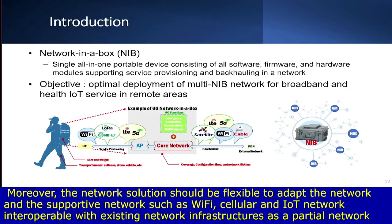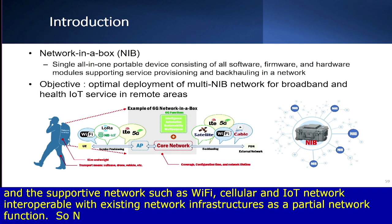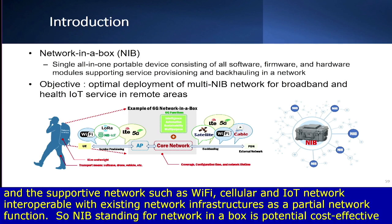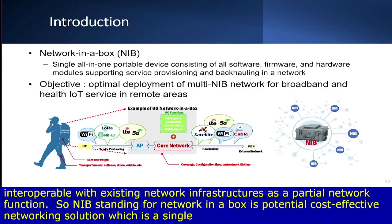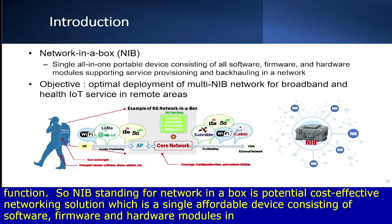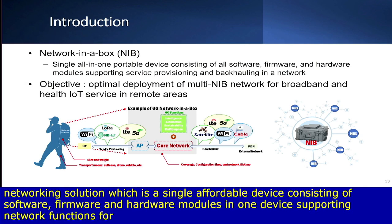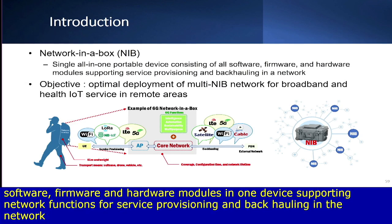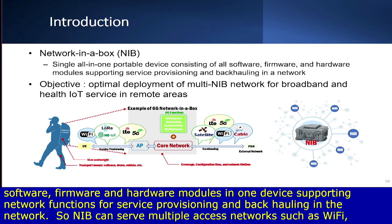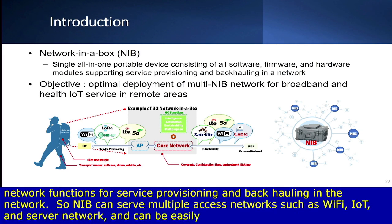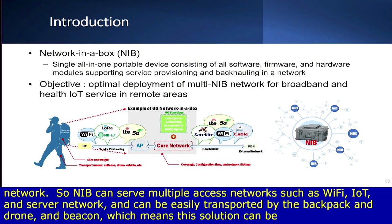NIB, standing for Network in a Box, is a potential cost-effective networking solution. It is a single all-in-one portable device consisting of all software, firmware, and hardware modules in one device, supporting network functions for service provisioning and backhauling. NIB can serve multiple access networks such as Wi-Fi, IoT, and cellular networks, and it can be easily transported by backpack, drone, or vehicle, making it portable and easy to redeploy according to network demand.